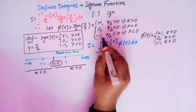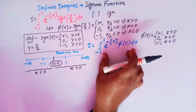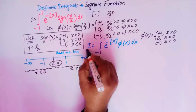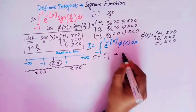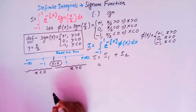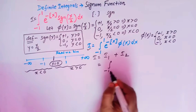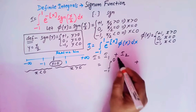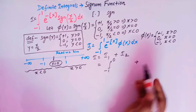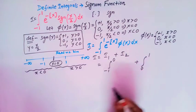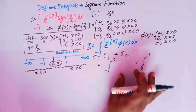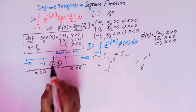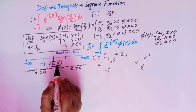Now we can break this integral as a sum of two integrals. So i can be written as i1 plus i2, where i1 is from minus 1 to 0, and i2 is from 0 to 1. We have split this integral at the breaking point x equal to 0.